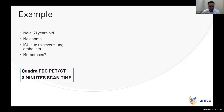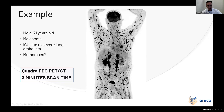The last regular ICU example: a 71-year-old male with melanoma admitted to the ICU due to severe pulmonary embolism. They asked for metastasis evaluation — three-minute scan time. The image shows diffuse metastasized melanoma.